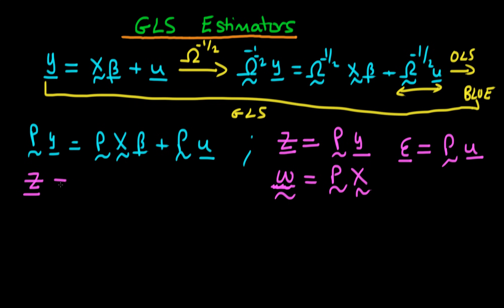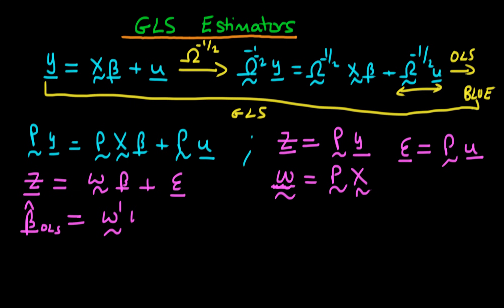With these substitutions we can rewrite our system as z = Ω̃β + ε. We can then estimate OLS on this transformed system using the familiar OLS estimator in matrix form: β̂_OLS = (Ω̃′Ω̃)^(-1) Ω̃′z, where z is the transformed dependent variable.